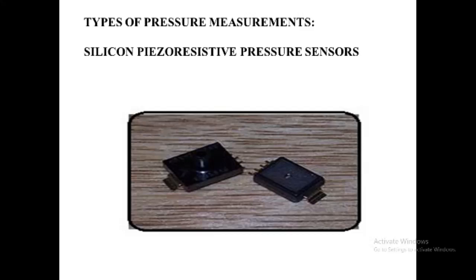Piezoresistive strain gauge technology is used, which basically uses the piezoresistive effect of bonded or formed strain gauges to detect strain due to applied pressure. Common variants include monocrystalline or polycrystalline silicon, bonded metal foil, thin film, and sputtered thin film. Generally, the strain gauges are connected in the form of a Wheatstone bridge circuit to maximize the output of the sensor. This is the most commonly employed sensing technology for general-purpose pressure measurement, used to measure absolute, gauge, vacuum, and differential pressure.